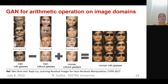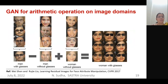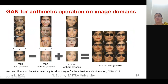GAN can also perform arithmetic operations in the image domain. For example, taking images of men with glasses minus images of men without glasses yields the concept of glasses. When a women's image without glasses is given, the GAN can generate the corresponding women's image with glasses. This kind of arithmetic operation on images is possible using GAN.